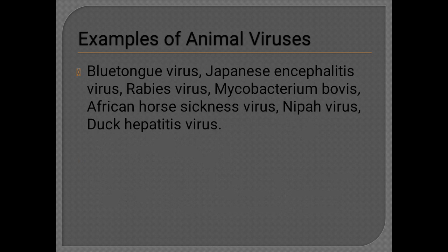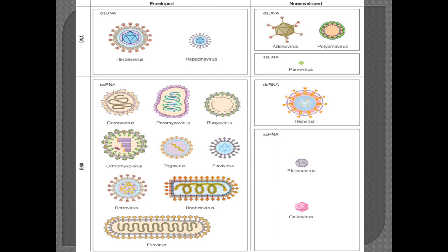Examples of animal viruses are bluetongue virus, Japanese encephalitis virus, rabies virus, Mycobacterium bovis, African horse sickness virus, Nipah virus, and duck hepatitis virus. The classification of viruses can be seen on the basis of whether they contain DNA or RNA and whether they are single-stranded or double-stranded.